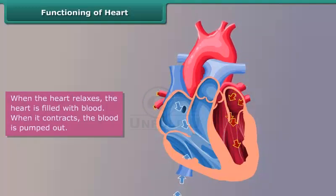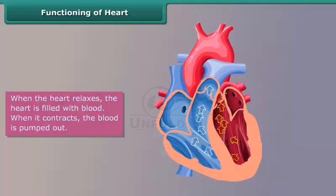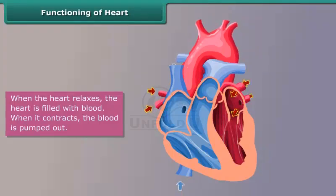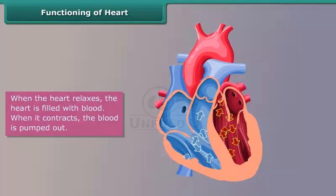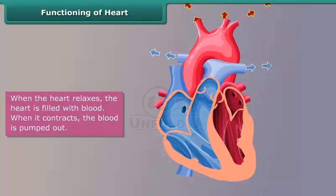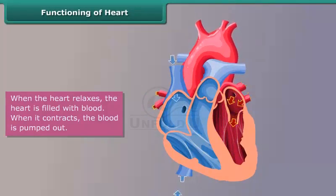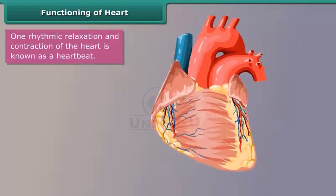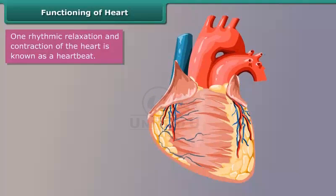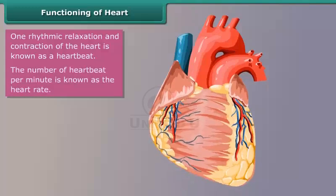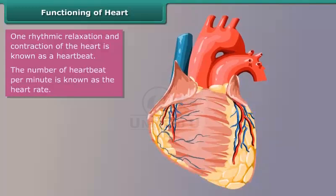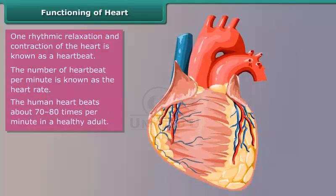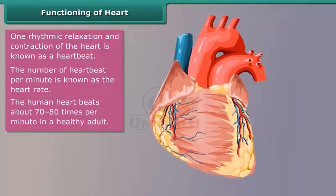The heart pumps blood through a rhythmic pattern of relaxation and contraction. When the heart relaxes, it is filled with blood; when it contracts, the blood is pumped out. One rhythmic relaxation and contraction of the heart is known as a heartbeat. The number of heartbeats per minute is known as the heart rate. The human heart beats about 70 to 80 times per minute in a healthy adult.